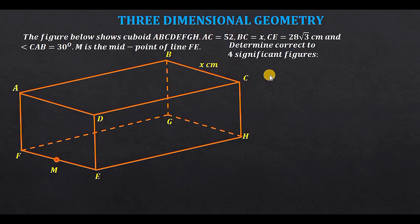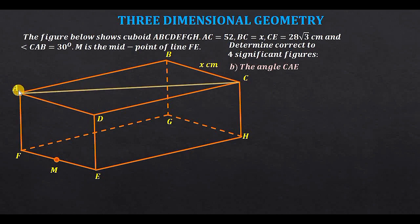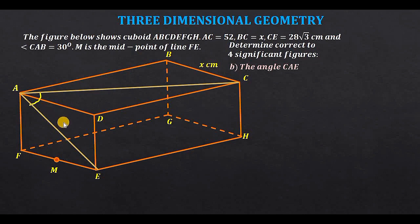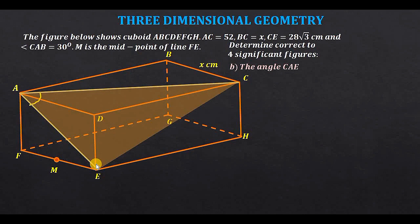For part B, we are required to determine angle CAE. Lines CA and AE meet at point A to form that angle. We will consider triangle ACE. Note that this is not a right-angle triangle, so we cannot make that assumption.